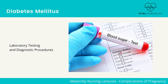Laboratory testing and diagnostic procedures for diabetes mellitus include a routine urinalysis with glycosuria and a glucose tolerance test. This test involves the use of a 50-gram oral glucose load, followed by plasma glucose analysis one hour later, performed at 24 to 28 weeks of gestation. Note that fasting is not necessary. A positive blood glucose screening is 140 or greater.